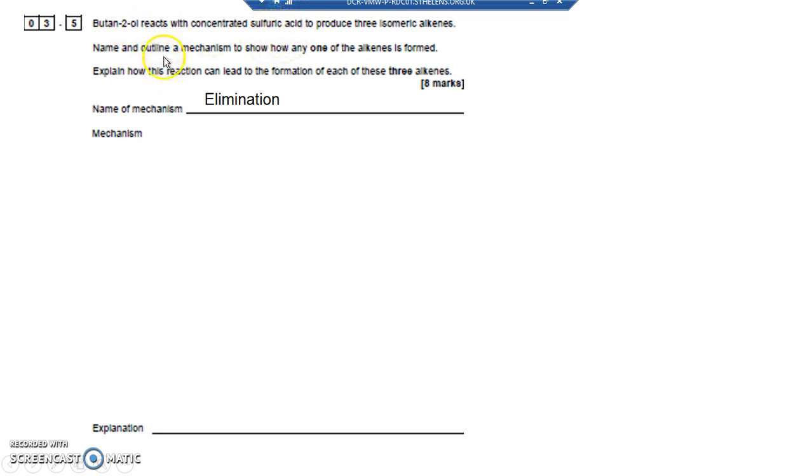The butan-2-ol has a lone pair of electrons on the O of the OH, which is going to attack the H+. Let's have a look at the mechanism then. So we've got a lone pair of electrons on the OH of butan-2-ol. So four carbons in the line, the OH is at carbon number two, and I've got a lone pair of electrons there on the OH. It attacks the H+ from the sulfuric acid.